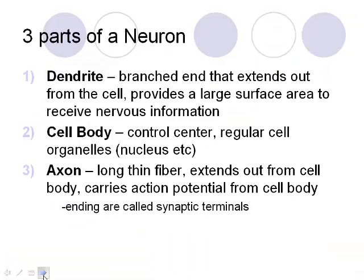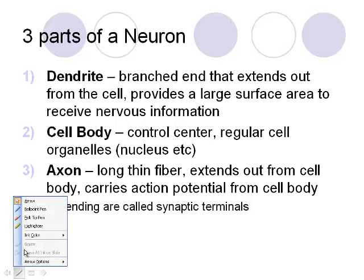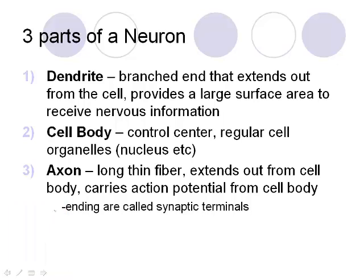The three parts of a neuron are the dendrite, the cell body, and the axon — and that's always the order. An impulse comes in through the dendrite, travels through the cell body, and goes out the axon. You may want to pause to write this down.